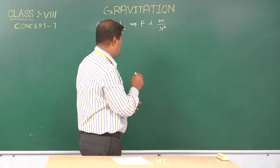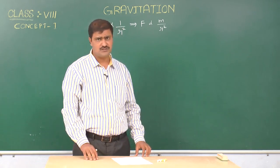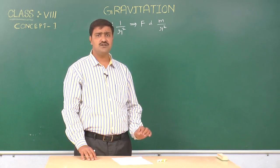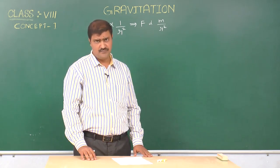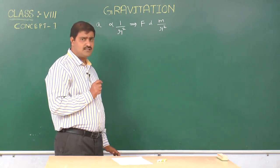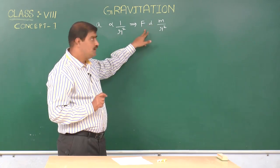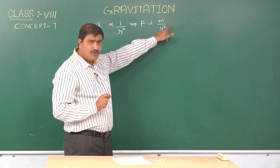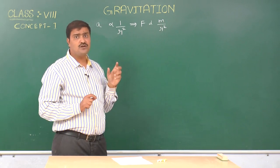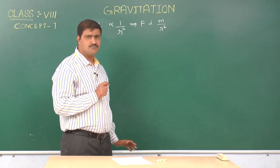According to Newton's third law, with whatever force the earth attracts the moon, with that same force the moon also attracts the earth. So from Newton's third law, we can say the force between the earth and moon is proportional to the mass of the moon, and also proportional to the mass of the earth.